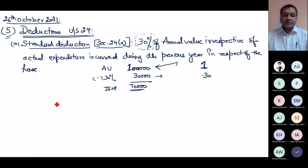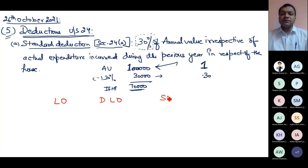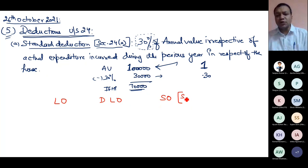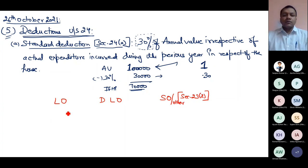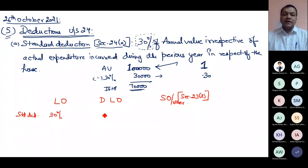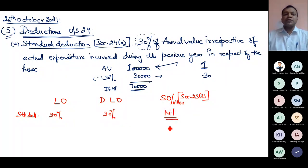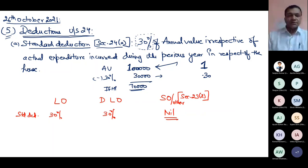There are three types of properties: let-out, deemed to be let-out, and self-occupied — technically Section 23(2) properties. For let-out and deemed to be let-out, the standard deduction will be 30%. For self-occupied, since the annual value is nil by default, the standard deduction also becomes nil. This is the first deduction under Section 24.